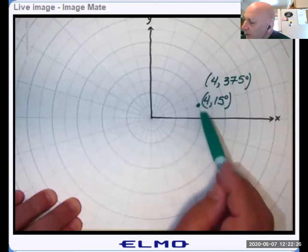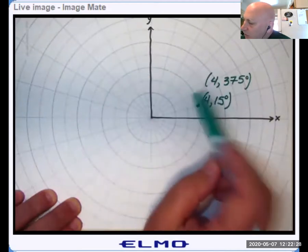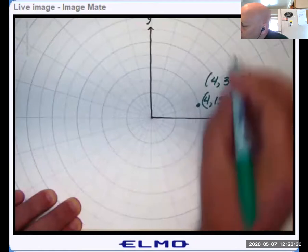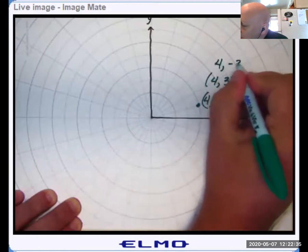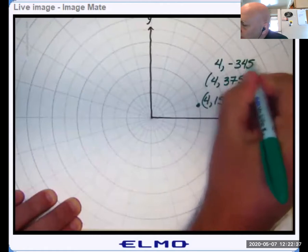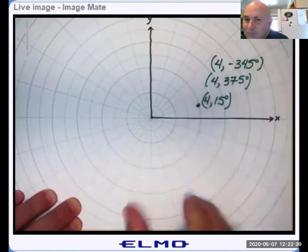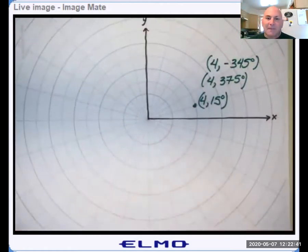What if I went this way? Well, now it's 4, negative 345 degrees. So those are three ways.